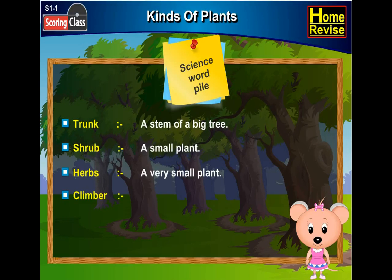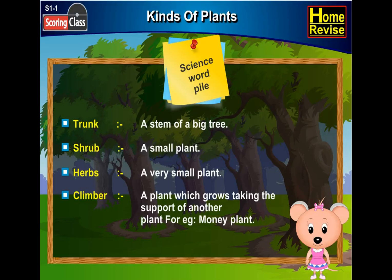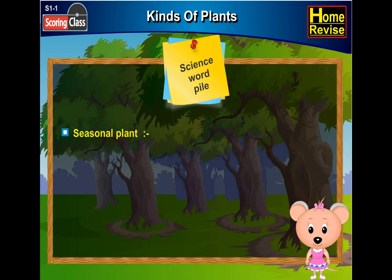Climber: a plant which grows taking the support of another plant. For example, money plant. Seasonal plant: a plant which grows in a particular season only.